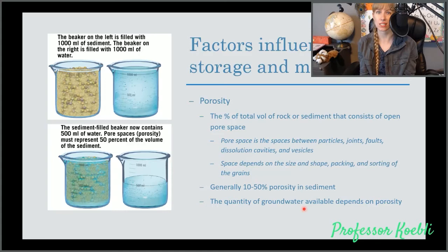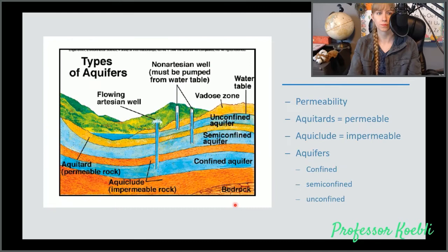If it is unsorted, pore space might be filled by sand or other finer grains. Generally, 10 to 50% porosity is what we are going to see in sediment, and the quantity of groundwater available depends on this porosity. This is where we get different types of aquifers.